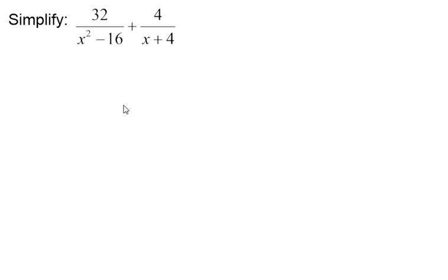We'll be going over the procedure to add two rational expressions. The two rational expressions you see I have here are 32 over x squared minus 16 plus 4 over x plus 4.